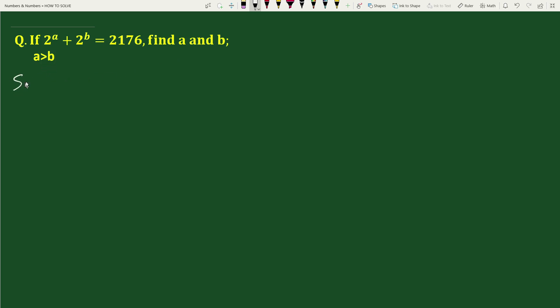Solution: given 2 to the power a plus 2 to the power b equals to 2176 where a greater than b. Taking k as any variable, we can write a equals to b plus k.